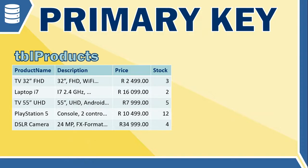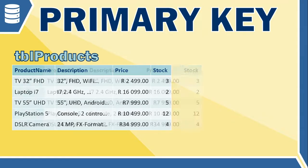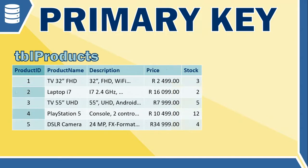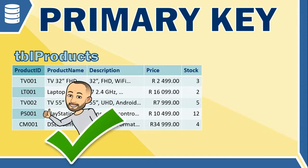Looking at this table, I can't see any field that is a suitable primary key. In this case, I think it's a good idea to create one — a new field called product ID. We could make it an automatic number (1, 2, 3, etc.) or a unique code like TV001 and TV002 depending on the product. Now we have a unique field we can use as a primary key. Ideally, once assigned, a primary key value should not change.